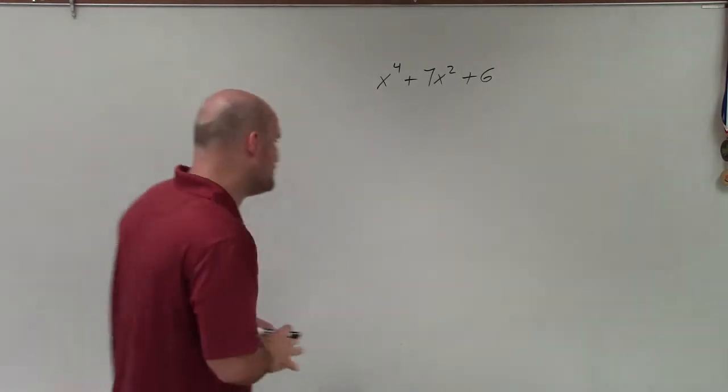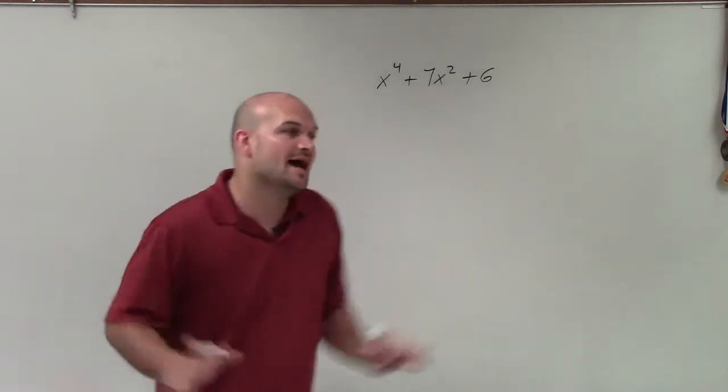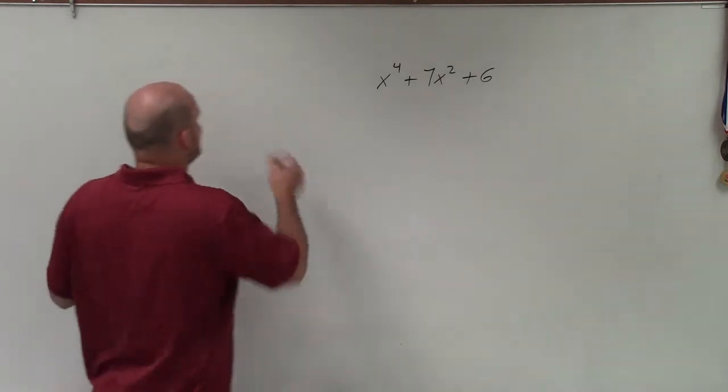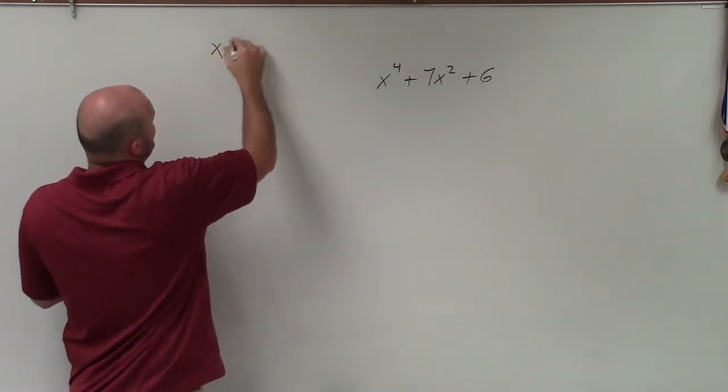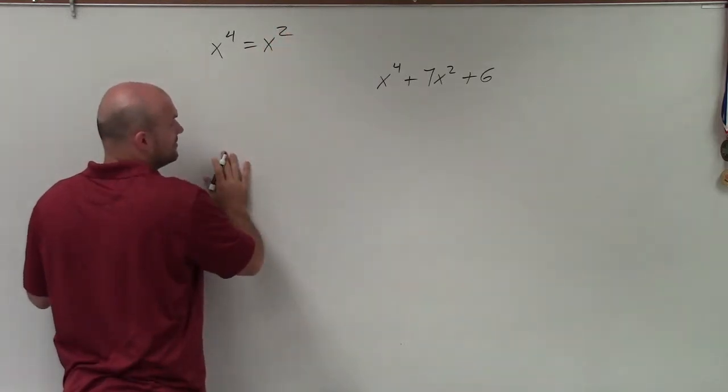So what I am going to do is I am going to forget about these x to the fourth. And what I'm going to do is I am going to substitute them in for x squared. So simply, I can just say x to the fourth is now going to be equal to x squared, right?